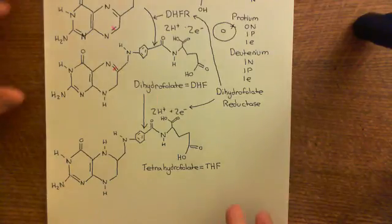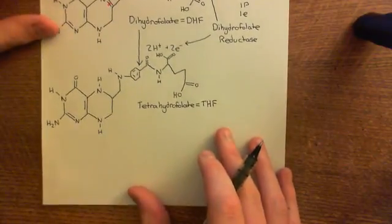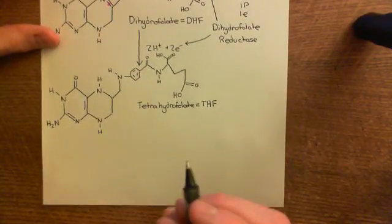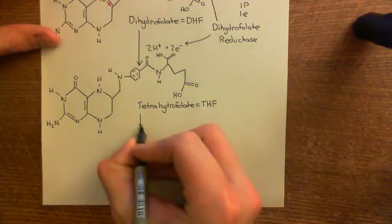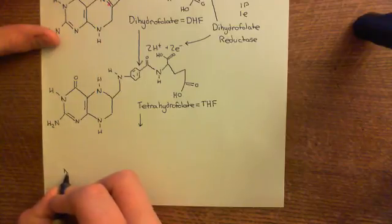Because this is actually very important because we are going to use N5N10 methylene tetrahydrofolate for our reaction to build a component of DNA, which is why this pathway is so important. Okay, right, so let's see how we convert this to N5N10 tetrahydrofolate. Okay, right, so let's try and squash this structure in down here.